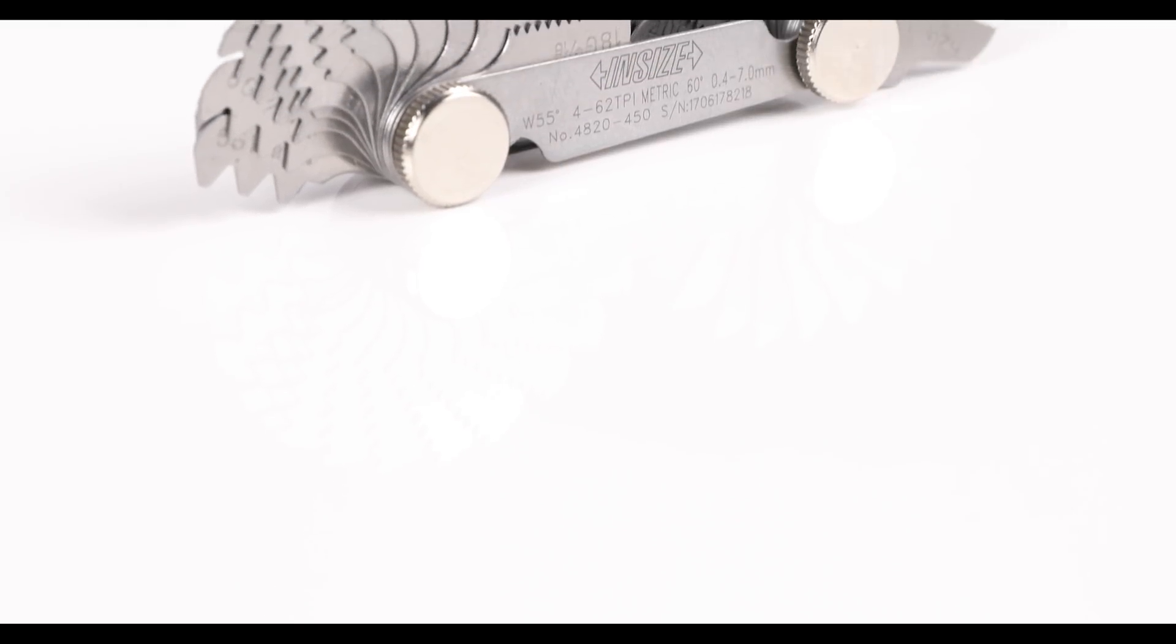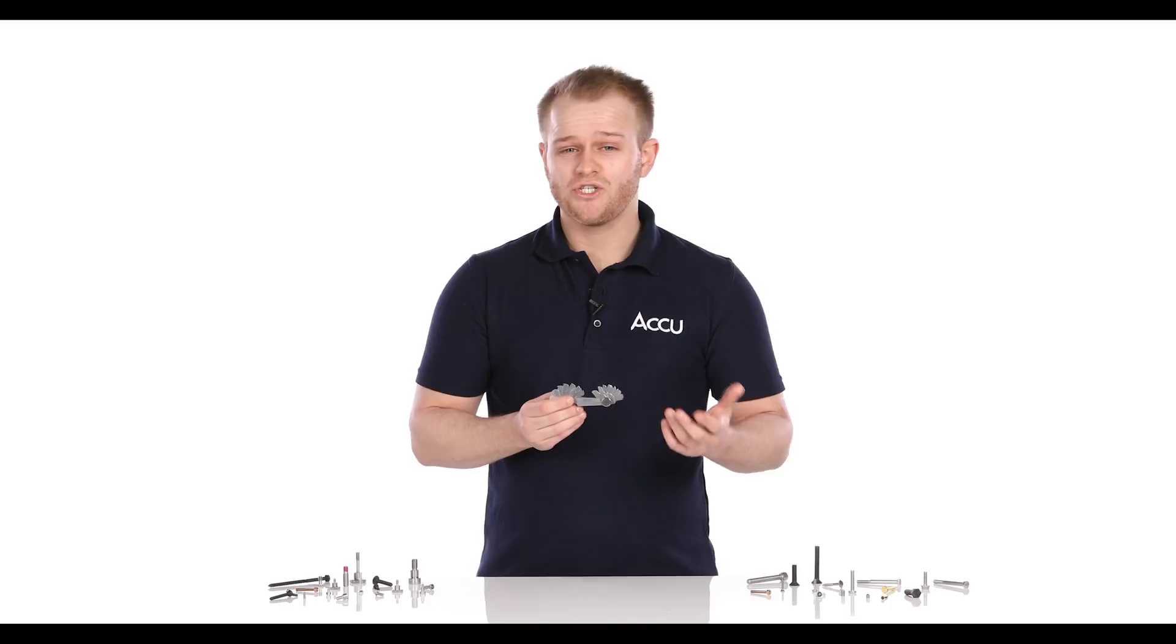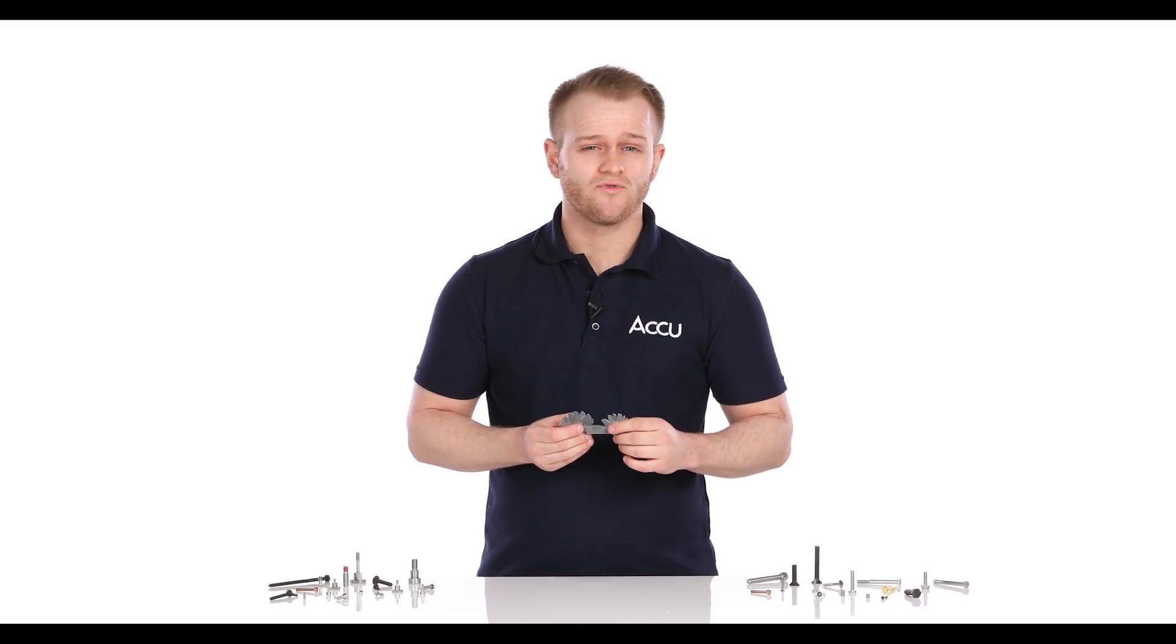Pro tip, the front of a leaf gauge tells you the range of sizes, thread type, and thread angle it is calibrated to measure, which should give you an idea of the leaf gauge you might need to check your screws.